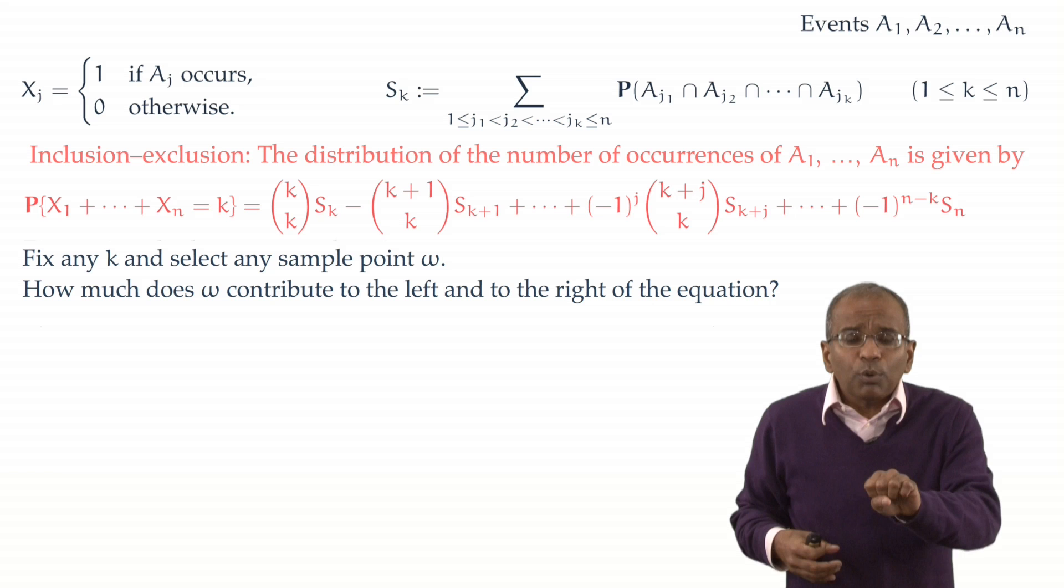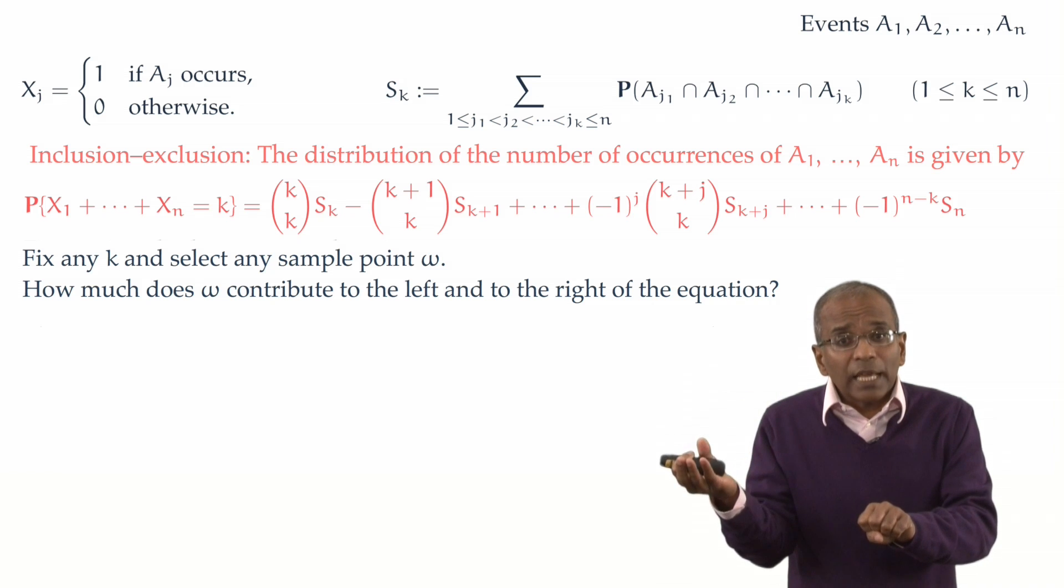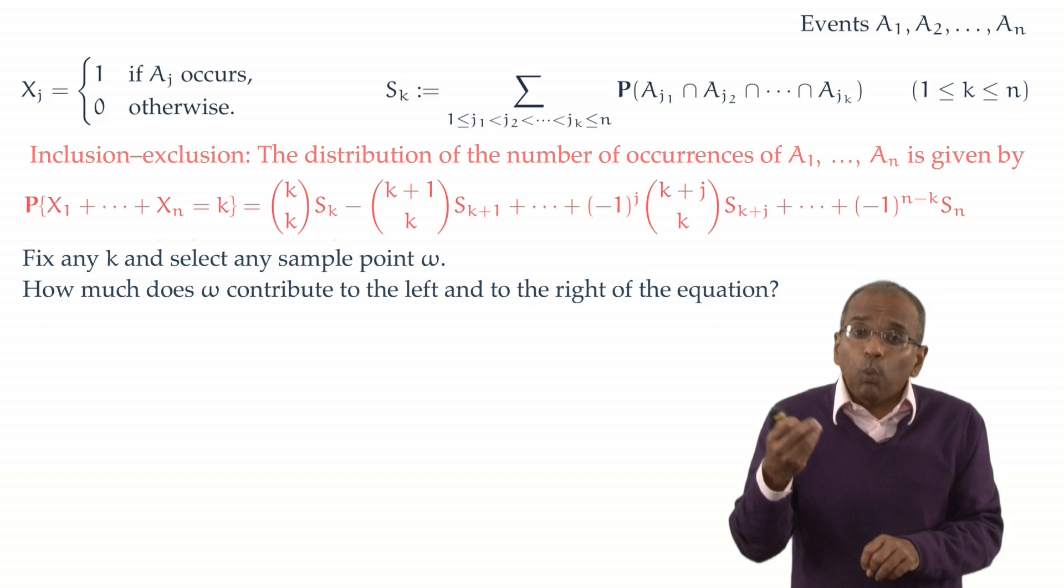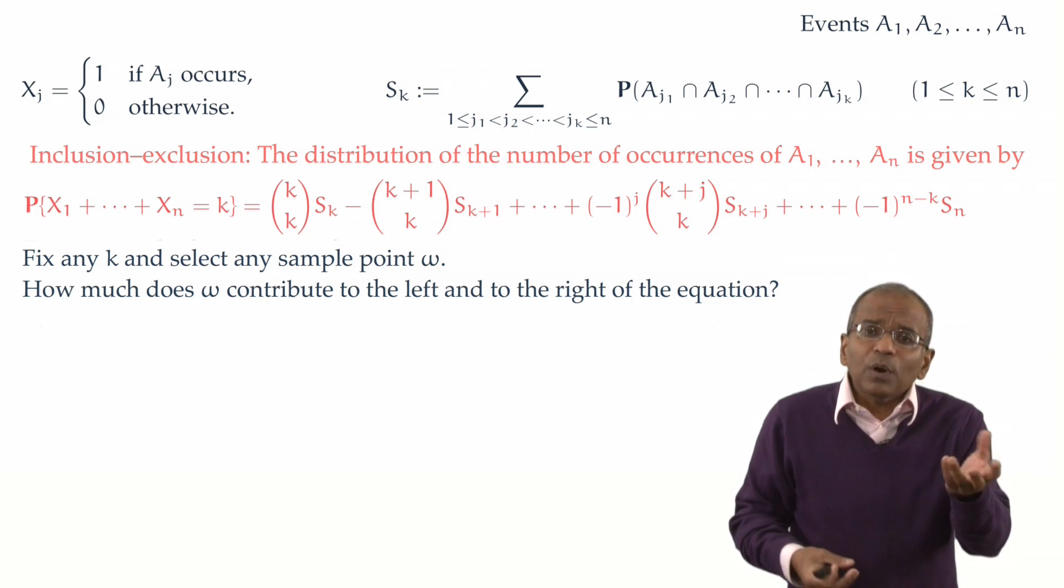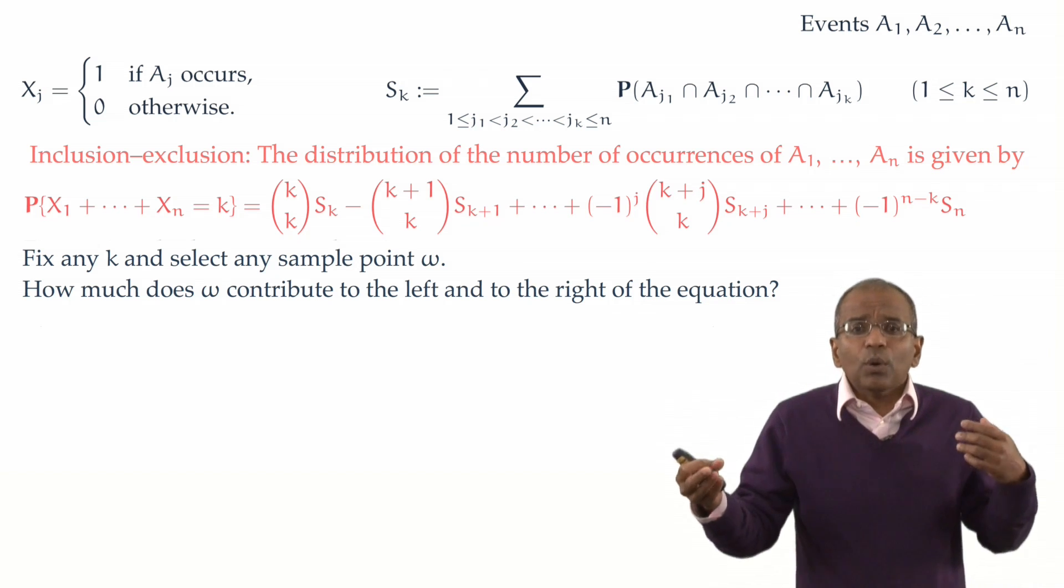Now, this sample point will reside in maybe none of the events A1 through An, perhaps in one of those events, perhaps in, say, L of them, where L is any number between 0 and N.